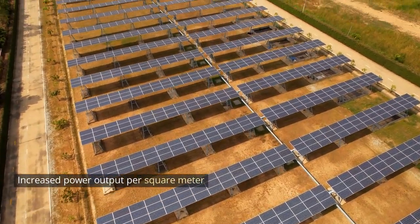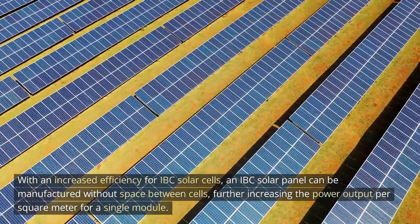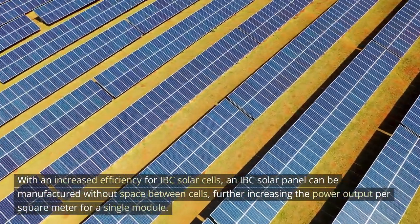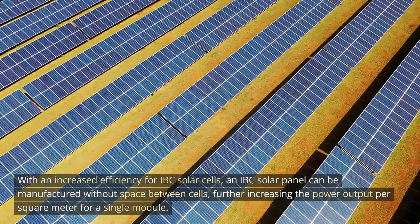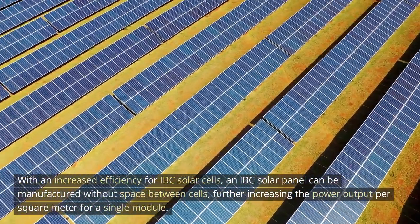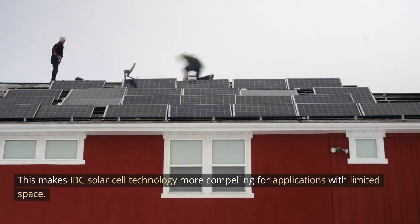Increased power output per square meter. With an increased efficiency for IBC solar cells, an IBC solar panel can be manufactured without space between cells, further increasing the power output per square meter for a single module. This makes IBC solar cell technology more compelling for applications with limited space.